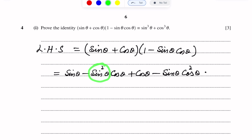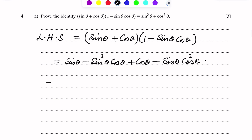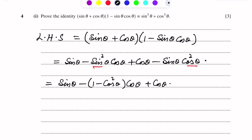Now we will use the identity sin squared theta plus cos squared theta equals one. We write sin squared theta as one minus cos squared theta, and cos squared theta as one minus sin squared theta. So sin theta minus bracket one minus cos squared theta into cos theta, plus cos theta minus sin theta into bracket one minus sin squared theta.